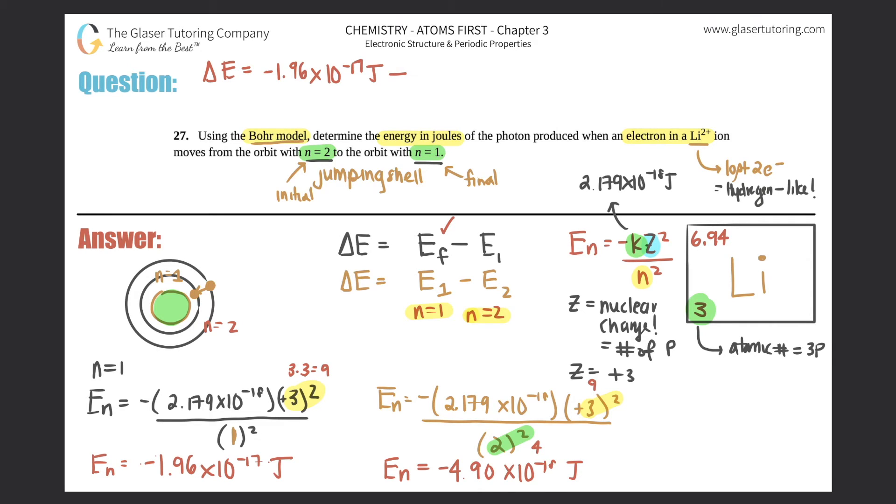Now we're ready to find that change in energy. The change of the final one, which was the first one, negative 1.96 times 10 to the negative 17th joules, minus the second one, which was negative 4.90 times 10 to the negative 18th joules. And when I subtract those two, I get negative 1.47 times 10 to the negative 17th joules.